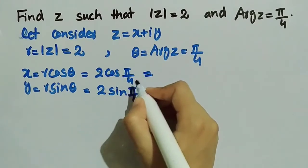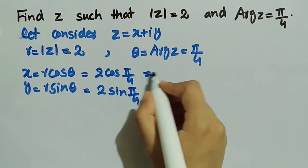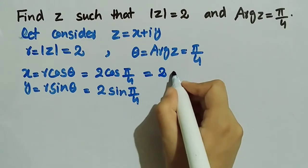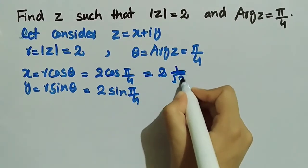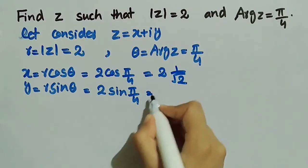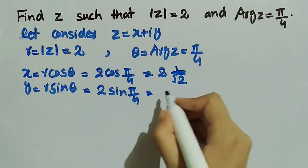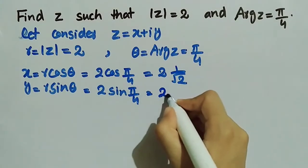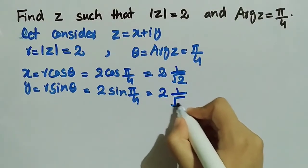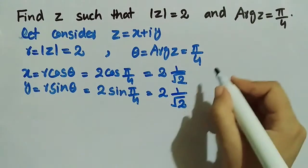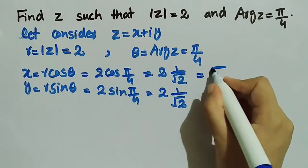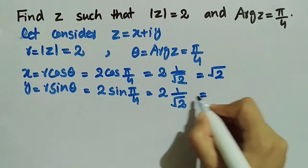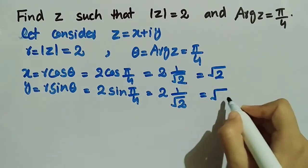Therefore, cos π/4 is equal to 1/√2, so x will become 2/√2, which can be written as √2. Same is the case with y.